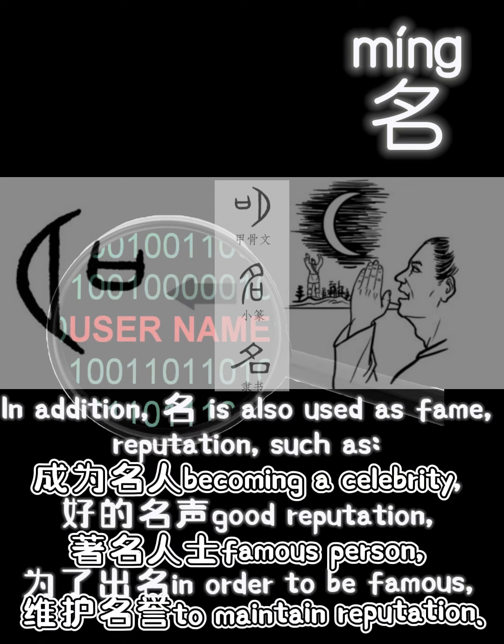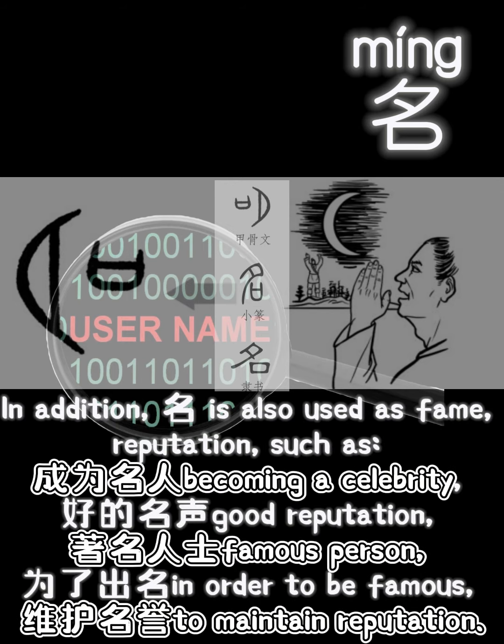In addition, 名 is also used to mean fame or reputation. For example: 成为名人 (becoming a celebrity), 好的名声 (good reputation), 著名人士 (famous person), 为了出名 (in order to be famous), and 维护名誉 (to maintain reputation).